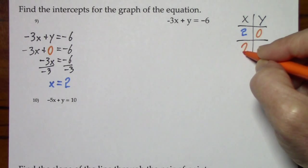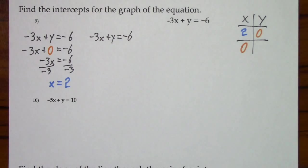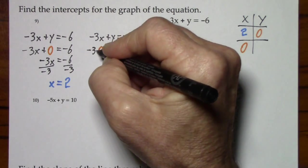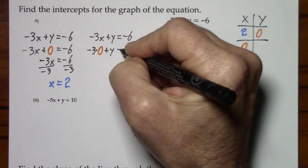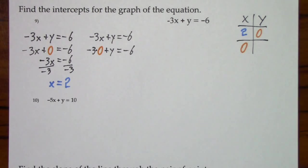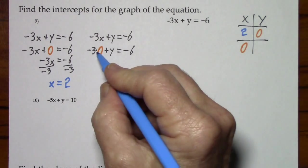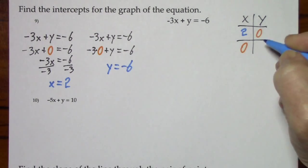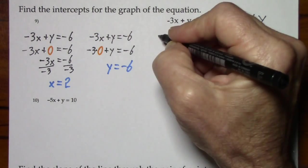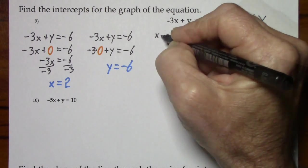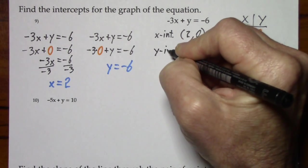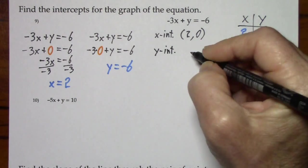For the y-intercept, x is 0. This all becomes 0, and we simply have. So I'll put that in the chart. So the x-intercept is 2, 0, and the y-intercept is 0, negative 6.